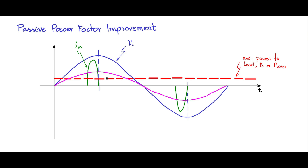The take-away is that as I widen the base of conduction, the peak will start reducing. That is the concept we are going to use for improving the power factor.